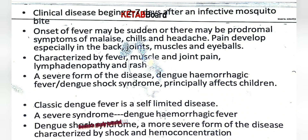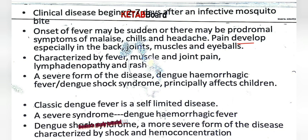The clinical disease begins two to seven days after an infected mosquito bite. The onset of fever may be sudden, or there may be prodromal symptoms of malaise, chills, and headache. Pain develops especially in the back, joints, muscles, and eyeballs.